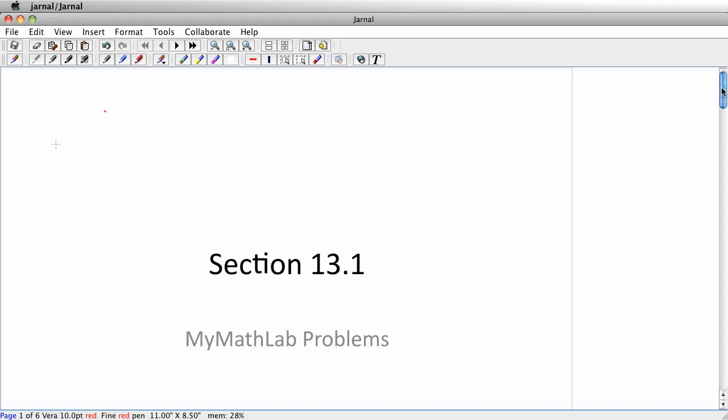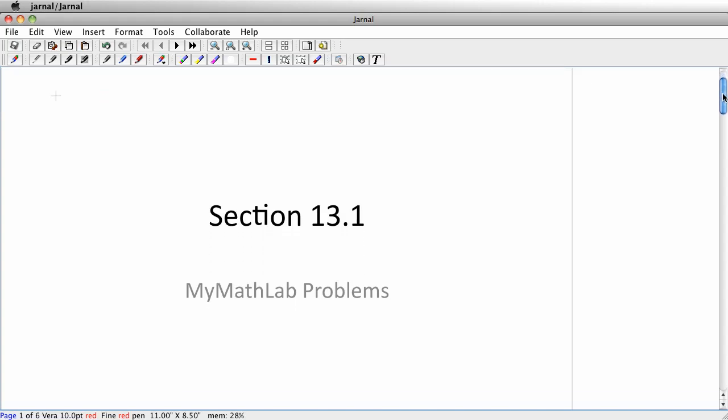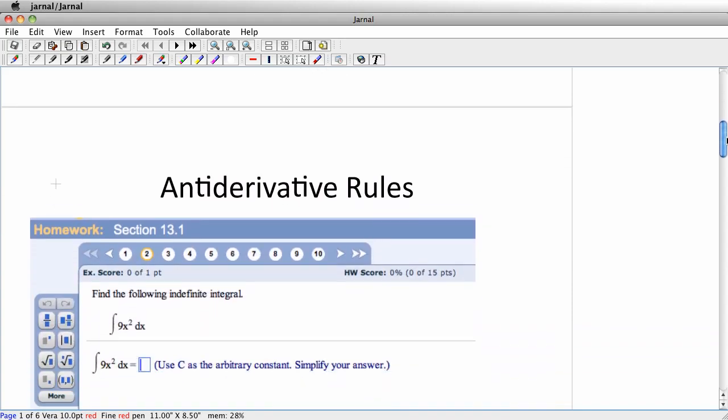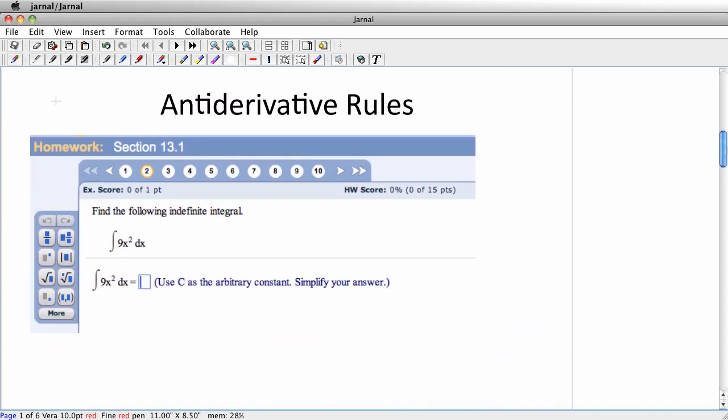Now, the notation for this is a little bit unexpected in section 13.1. You'll have to just bear with me through 13.1 and we'll see why in the next section why the notation is what it is. But the notation consists of this tall S symbol, and that really is an S. It's supposed to look like an S for summation.